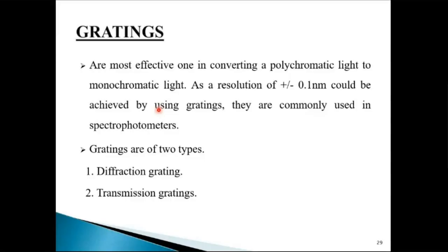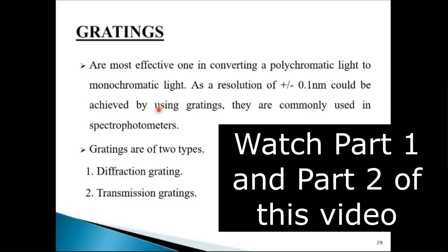We were looking at chapter UV-Visible Spectroscopy. We have learned all the theory and now we are in instrumentation. We saw three different types of instruments and we have seen already those different sources of electromagnetic radiation. Moving on, we have also seen some types of wavelength selectors. We are done with filters; now today we will see what are gratings.